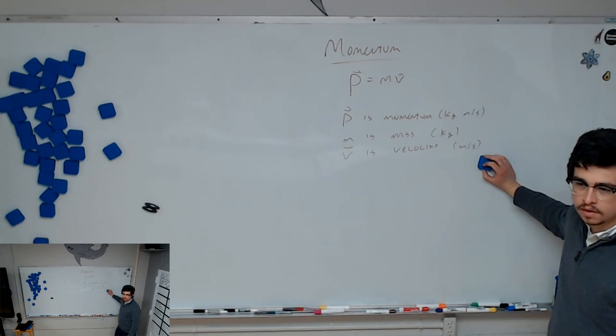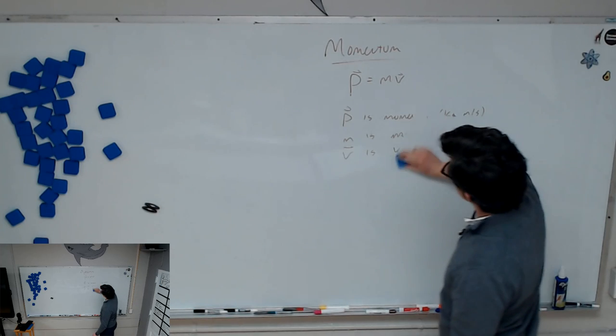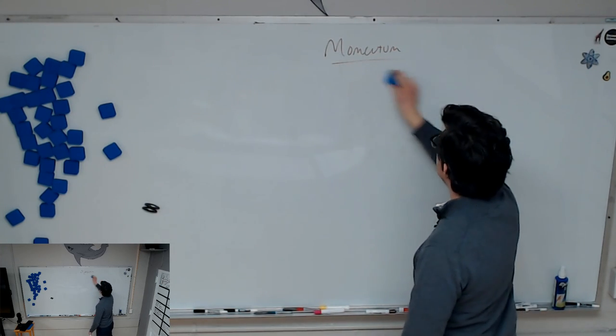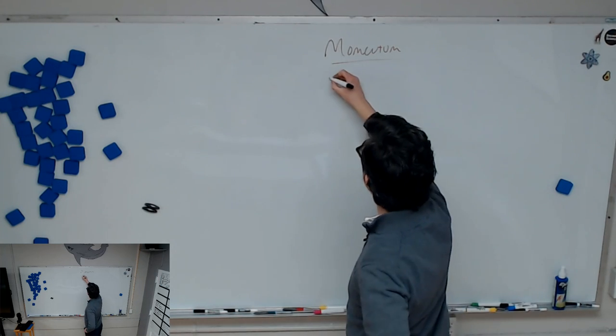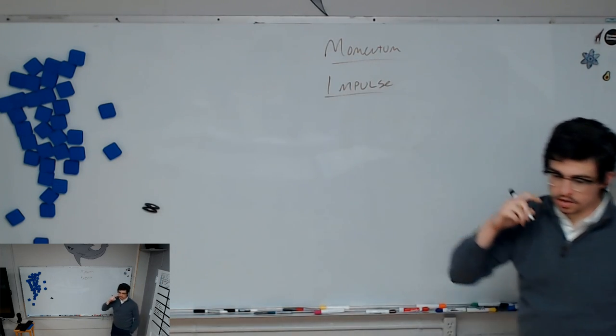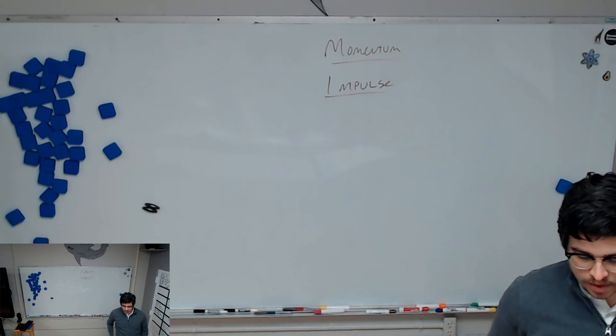So everything, all matter always has inertia, because inertia depends only on mass. But momentum also depends on velocity, and so only moving objects have momentum. Can I erase this so we can move on? It looks nice and brown up here now. Okay, so the next thing we're going to talk about is this thing called impulse. We'll come back to momentum when we talk about conservation of momentum. But for now, we're going to talk about impulse.